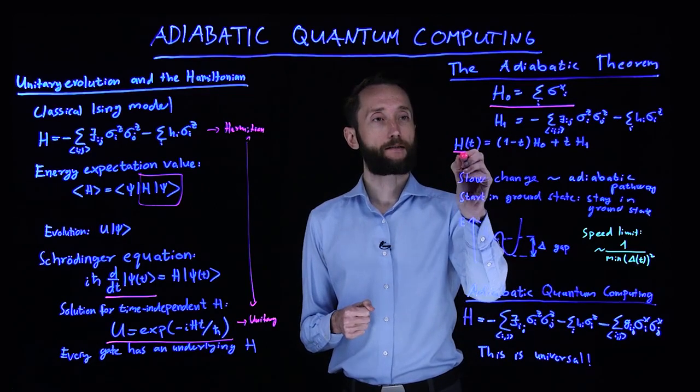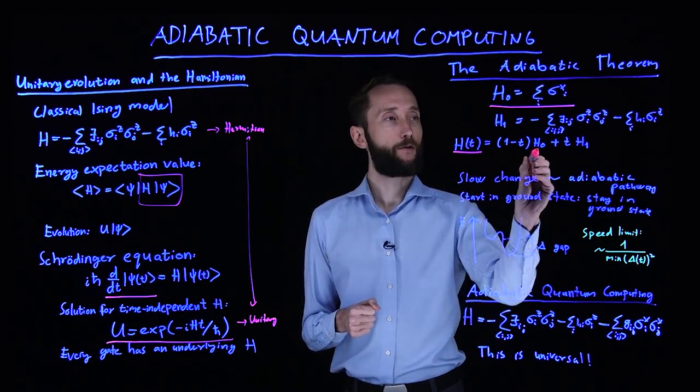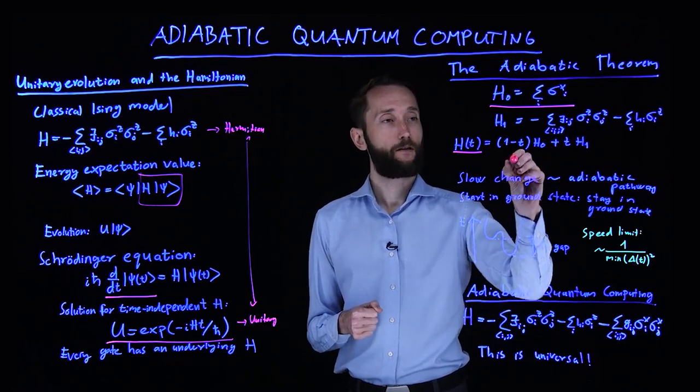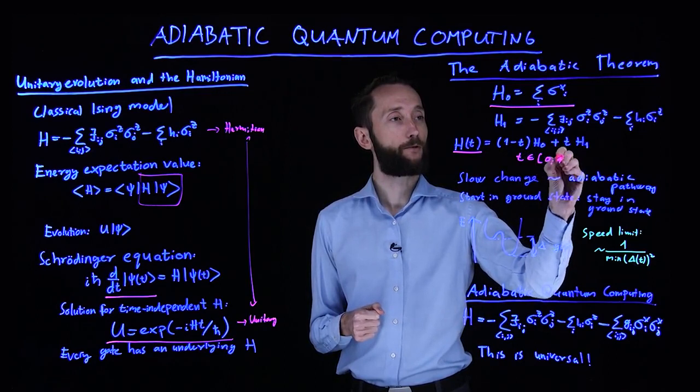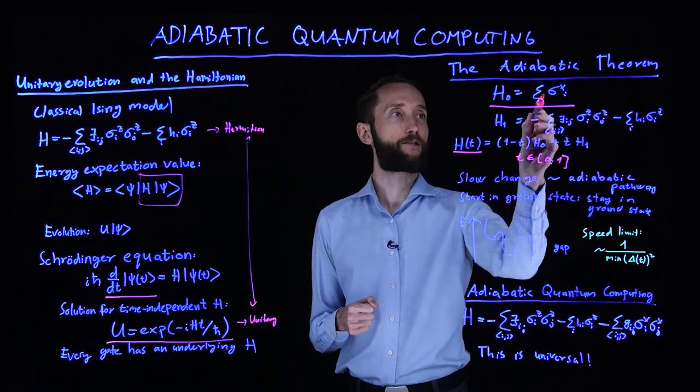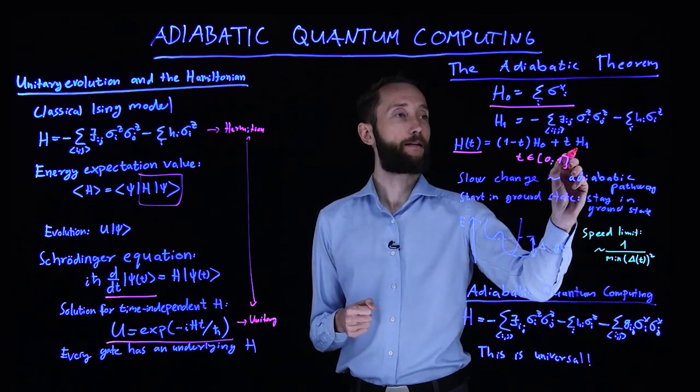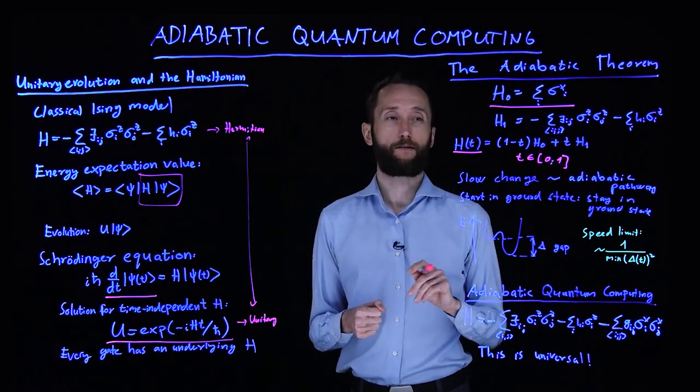And we can take a time-dependent Hamiltonian which mixes the two. So t starts in 0 and goes all the way up to 1. If t equals 0 it's just a transverse field, and if t equals 1, it's only the classical Ising model.